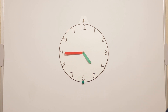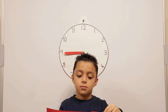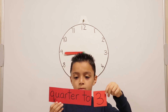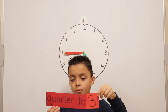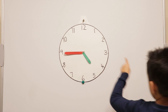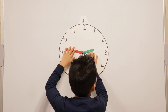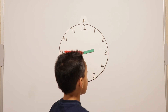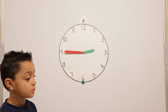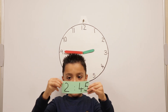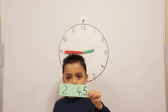Let's do quarter to three. So that's how we write quarter to three. Now can you show us on the clock? And is there another way we can write quarter to three? Two colon forty-five.